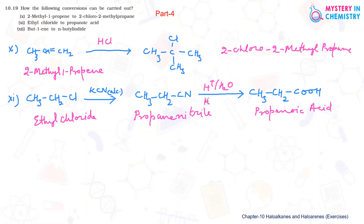The 12th conversion: but-1-ene, with four carbon atoms and a double bond. CH2 with one hydrogen, then CH2, then CH3. It should be converted to n-butyl iodide: CH3-CH2-CH2-CH2-I. For this, the first reaction should be bromo compound formation.